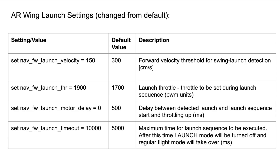The next setting I altered was the launch throttle. The default value is 70%, but I upped mine to 90%. Next was the launch motor delay — the time between iNav detecting the launch and the throttle starting. The default is 500ms (half a second), which is good if you're worried about the prop catching your hand. Personally, I like the motor to start as soon as launch is detected.